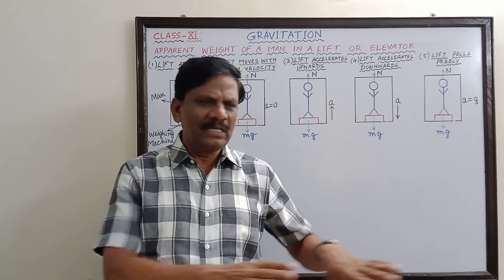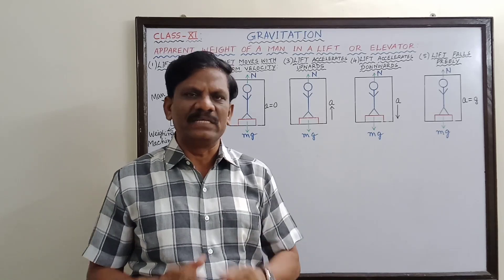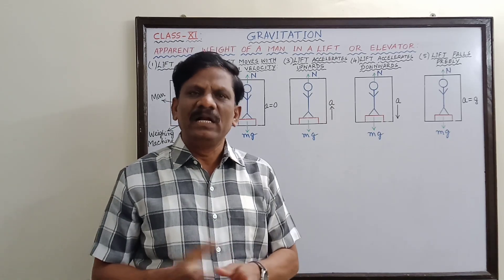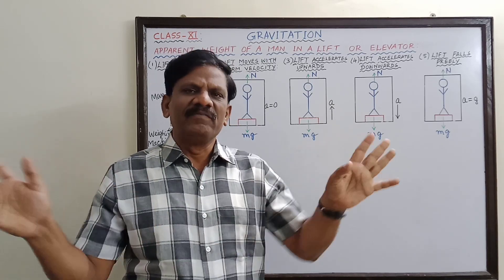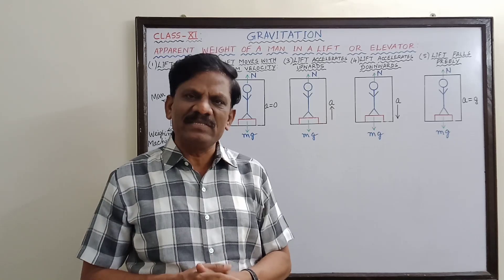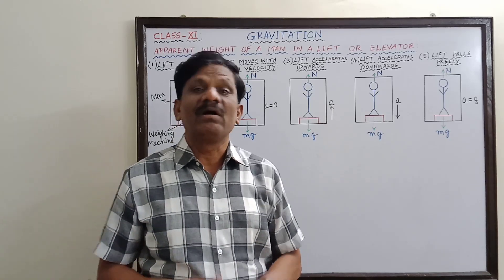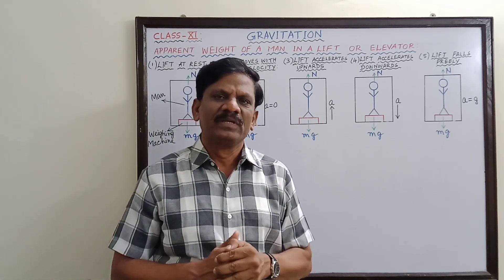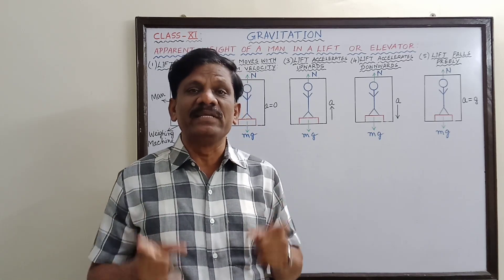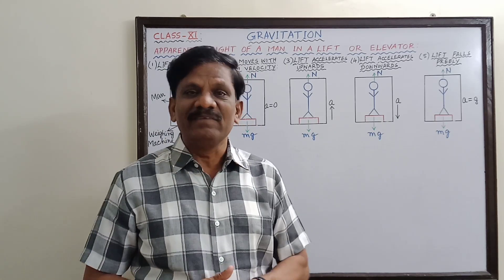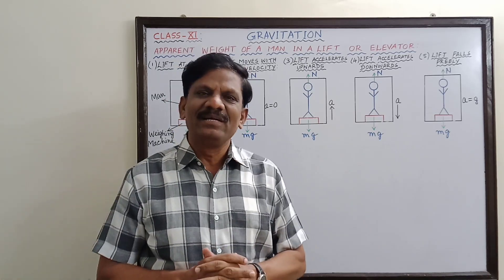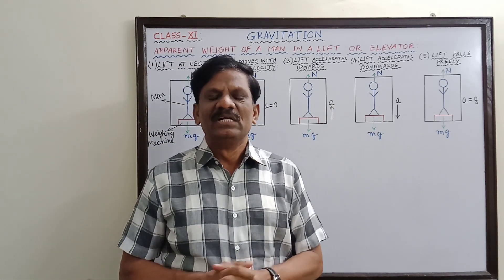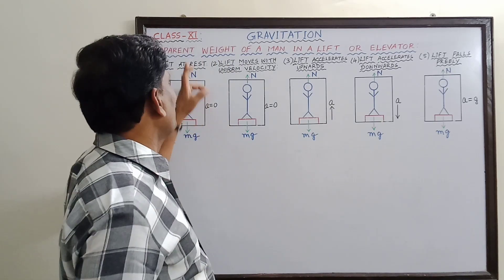This reaction force is equal to your weight — both are equal in magnitude and opposite in direction. That is how we find our weight on level ground. Now, what will happen if you keep a weighing machine inside a lift or elevator? Under various cases — when the lift is at rest, moving uniformly, or accelerating upward or downward — the reaction offered by the weighing machine is called your apparent weight. Sometimes the apparent weight may equal, exceed, or be less than your true weight.